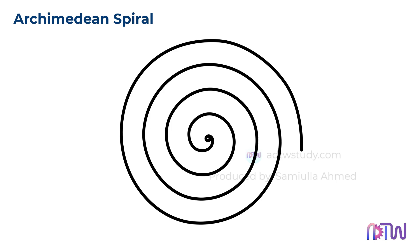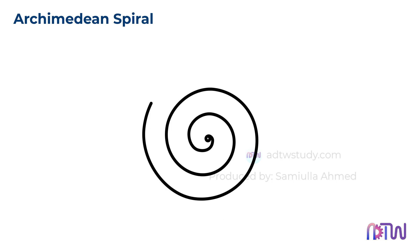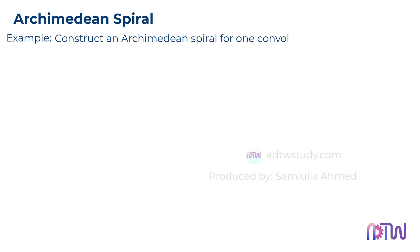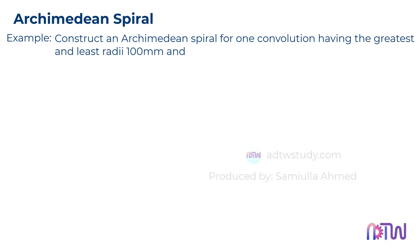Let's solve an example question to understand how to construct it. Construct an Archimedean spiral for one convolution, having the greatest and least radii of 100 mm and 20 mm respectively.